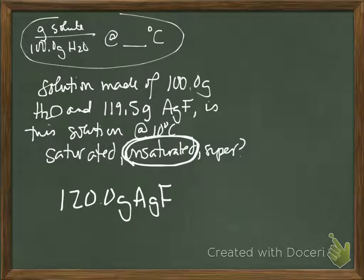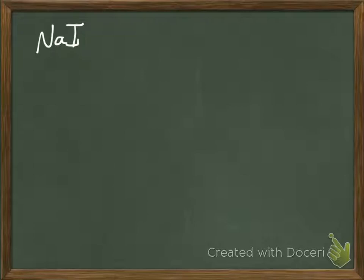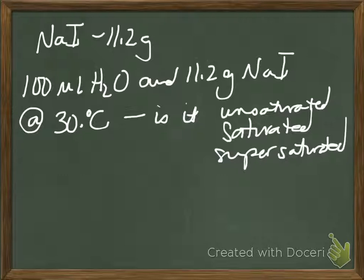Let's do something a little bit different here. What's that compound? NaI? Sodium iodide. 100 milliliters of H2O and 11.2 grams of sodium iodide. At 30 degrees, is it unsaturated, saturated, or supersaturated? Be careful. I smell a trap.